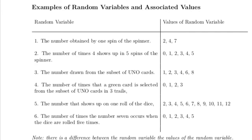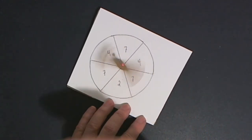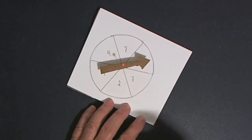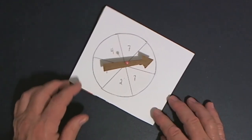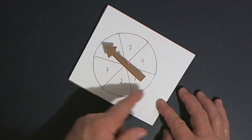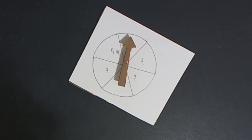Those six examples are summarized in the handout. Make a distinction between the random variable and the values that the random variable can take on. Now let's look at the probability distribution for each of those six cases. If the random variable is what number shows up when you spin the spinner, then there are three possibilities: two, four, or seven. Some numbers — like four — appear twice and seven appears three times.